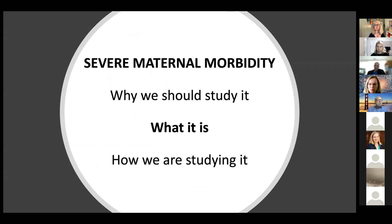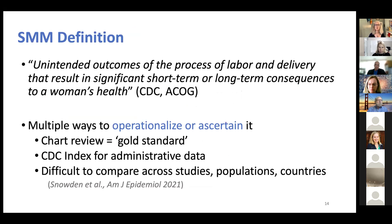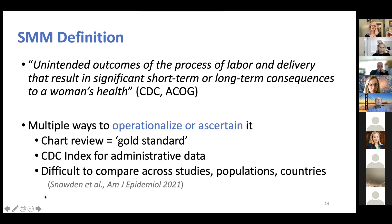The most popular definition in the US is: unintended outcomes of the process of labor and delivery that result in significant short or long-term consequences to a woman's health, with really an acute onset during this time. There are many ways to operationalize it — chart review is the gold standard, but that is not feasible for population-based large-scale work. We use the CDC index, which was designed for large-scale administrative or claims data and has been validated by Elliot Maine's rigorous and largest validation study of that index.